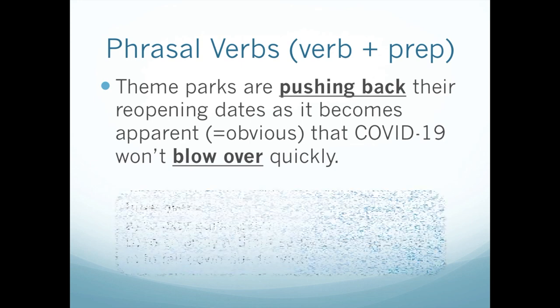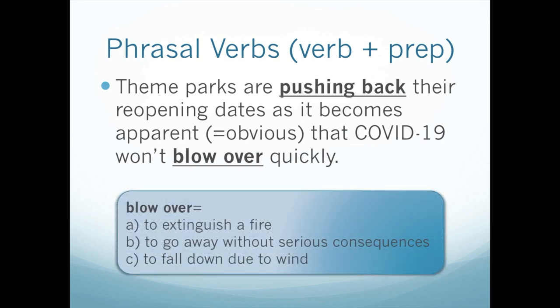Now let's look at blow over. Do you think blow over means A, to extinguish a fire; B, to go away without serious consequences; or C, to fall down due to wind? Again, phrasal verbs act like verbs, and all three definitions are verbs. If you said B, you're correct. In this sentence it's actually negative — it said won't blow over, so it's not going to go away without serious consequences. Sadly, we know COVID-19 is serious, and at the time of this recording it is getting worse. But hopefully it will soon get better.